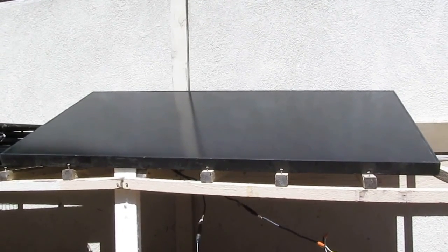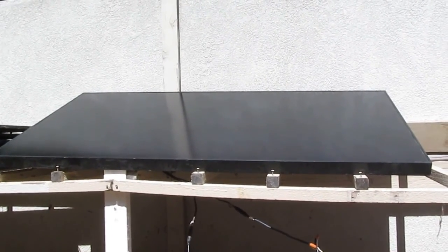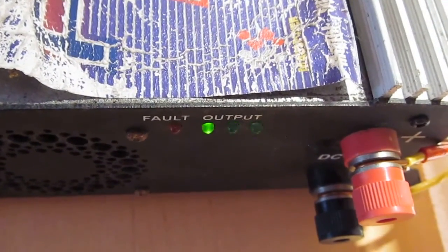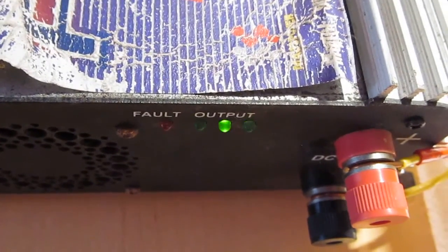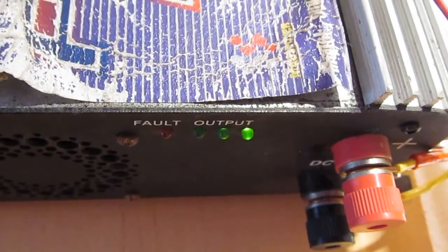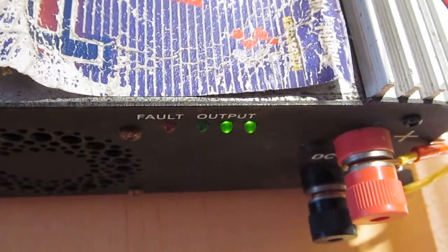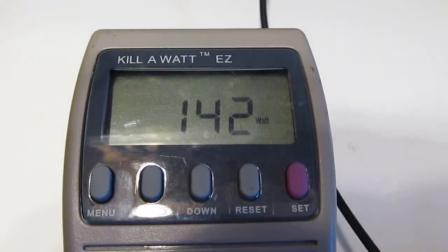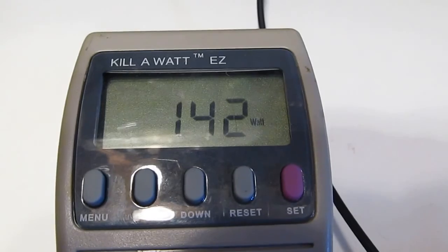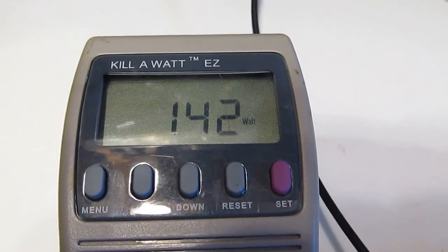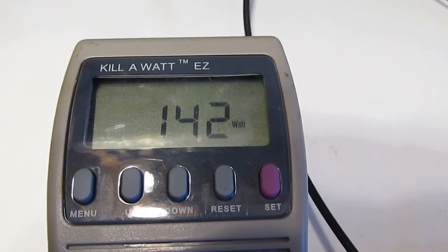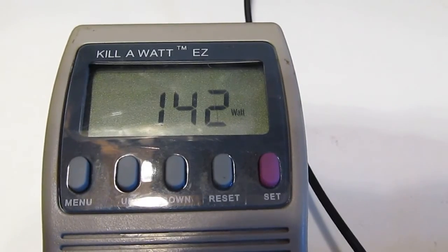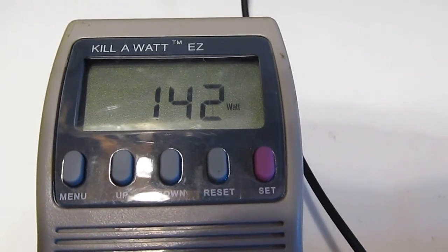And next is my sun power 215 watt panel. Hook it up to my inverter and it's running. As you can see here, the light flashes more vigorously than before. Than the other poly-crystalline panel. And it's currently producing 142 watts. So as you can see, it is a lot more. This mono-crystalline panel, the sun power panel. It's a lot more efficient than the poly-crystalline panel.